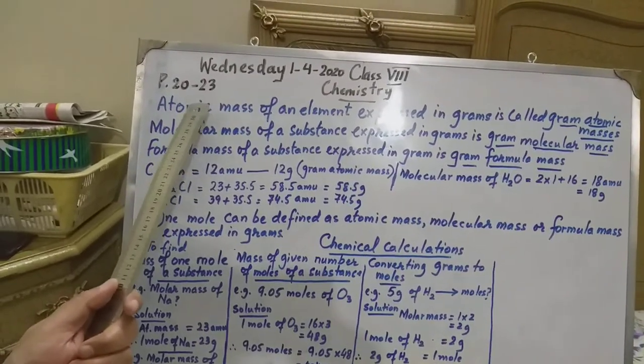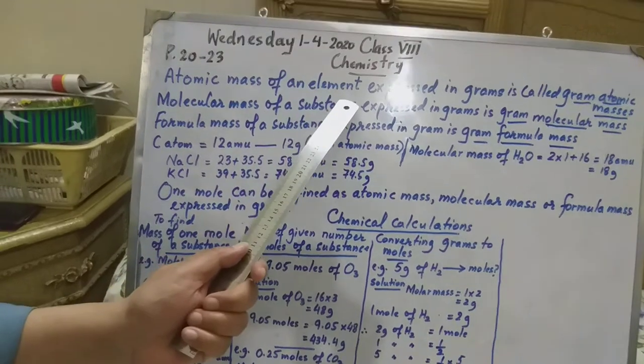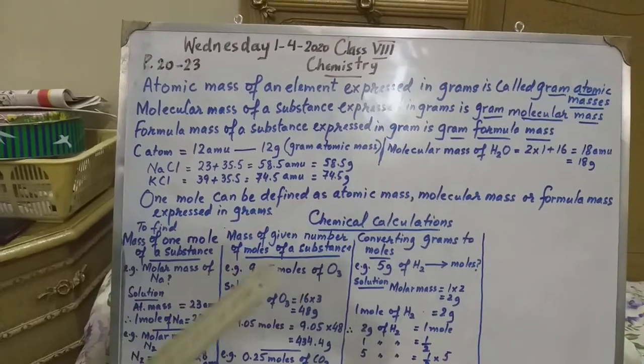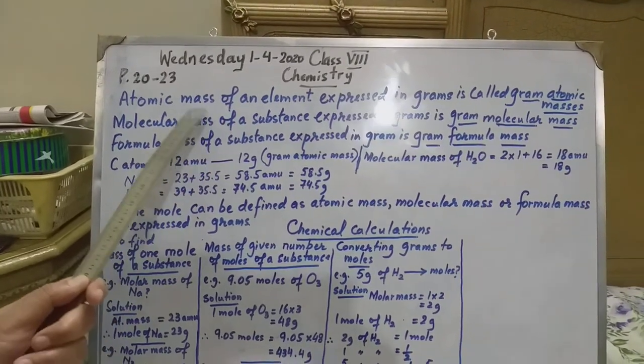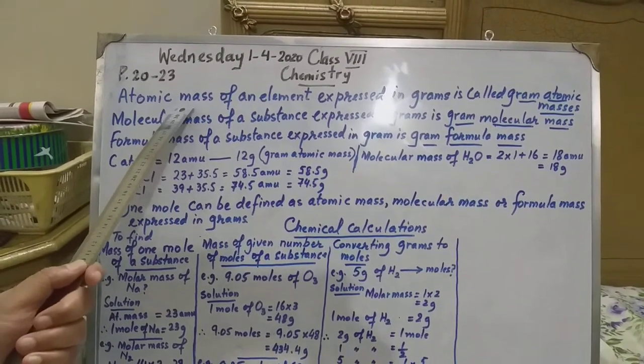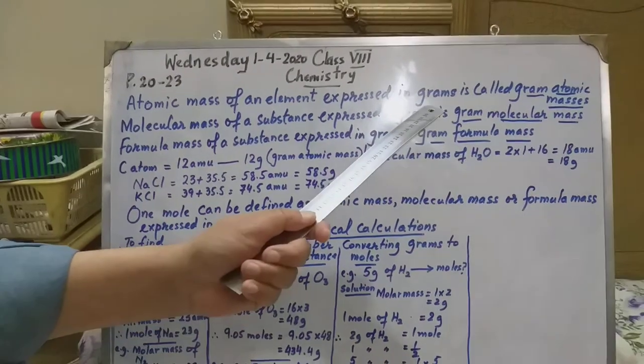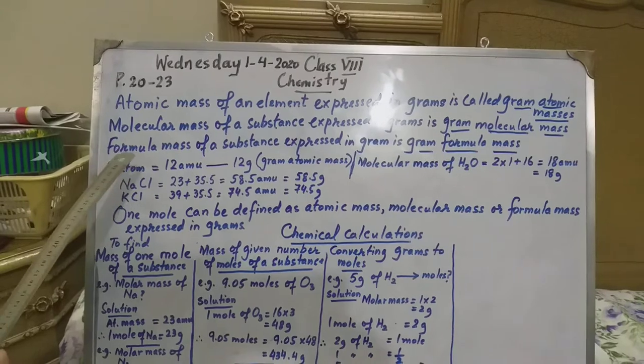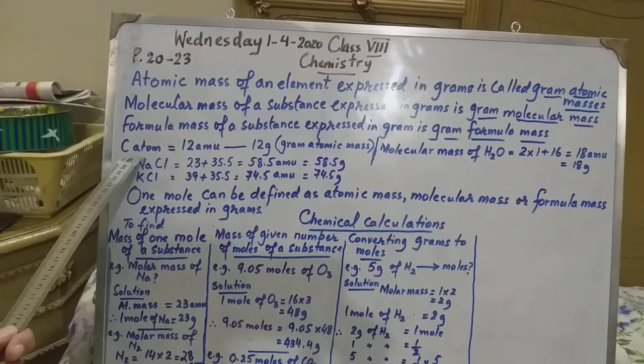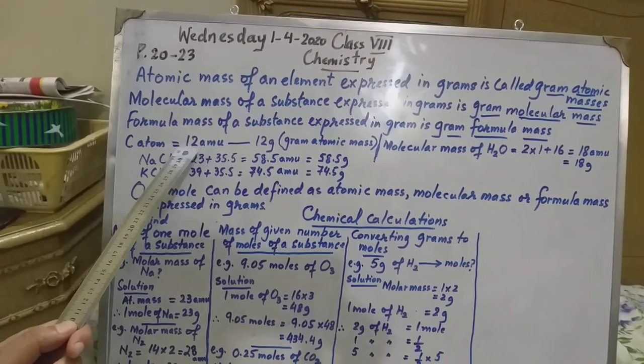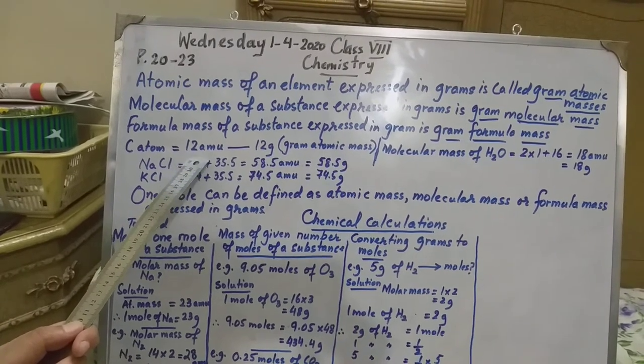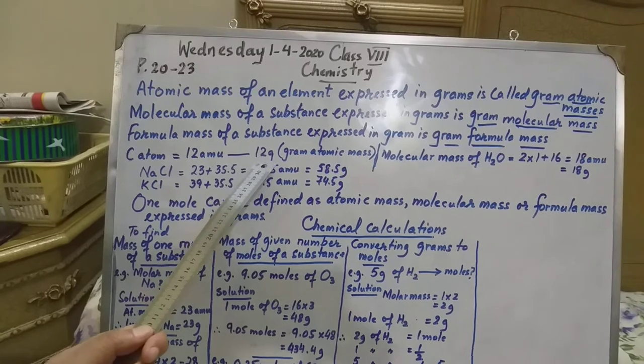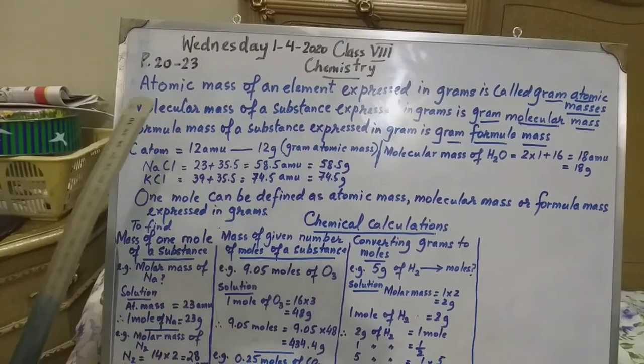The atomic mass of an element expressed in grams is called gram atomic mass. Element ka jo atomic mass hai, usko hum gram mein agar consider karte hain to usko gram atomic mass kehte hain. Misal ke taur pe, jahaan pe dekhen, yeh niche ek example diya. Carbon atom hai. Carbon atom ka wazan jo hai wo 12 atomic mass unit hai. Ishi ko agar hum gram mein lein to yeh iska gram atomic mass ho jayega.